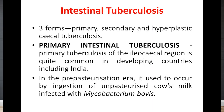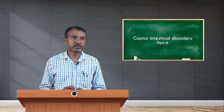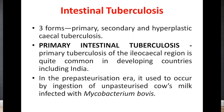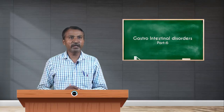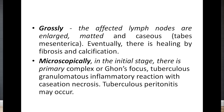Primary tuberculosis of the ileocecal region is quite common in developing countries including India. This is mainly due to ingestion of unpasteurized cow's milk, which is rich in Mycobacterium bovis. In the pre-pasteurization era, it used to occur by ingestion of unpasteurized cow's milk. Grossly, the affected lymph nodes are enlarged, matted, and caseous.